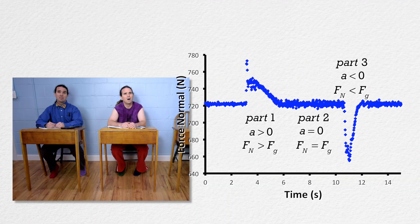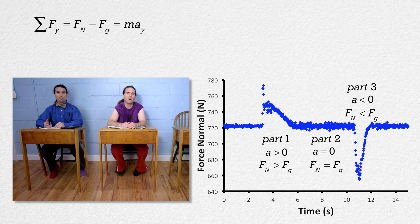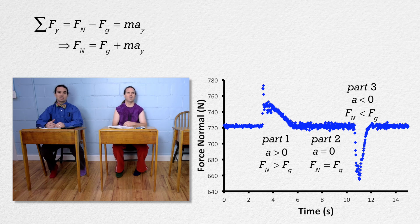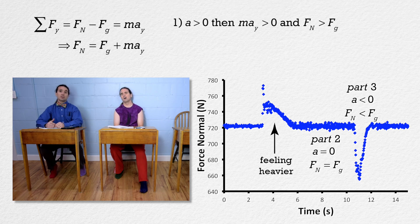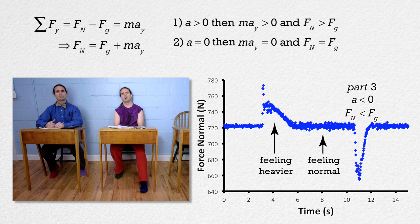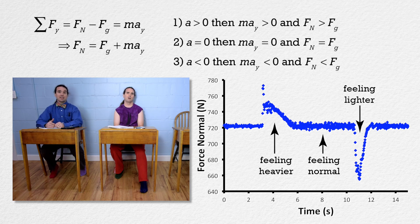Going back to the free body diagram and Newton's second law: add force of gravity to both sides of the equation and we get force normal equals force of gravity plus mass times acceleration in the y direction. In other words, apparent weight equals weight plus mass times acceleration in the y direction. During part one, when Bo is just starting to move upward with a positive acceleration, mass times acceleration in the y direction is positive, so apparent weight is greater than weight — which is why he feels heavier. During part two, moving at constant velocity, acceleration is zero and apparent weight equals weight. During part three, when the elevator is stopping with a downward or negative acceleration, mass times acceleration in the y direction is negative, so apparent weight is less than weight — which is why he feels lighter.